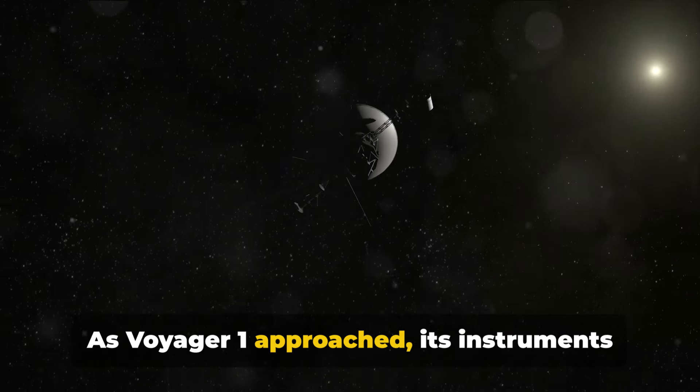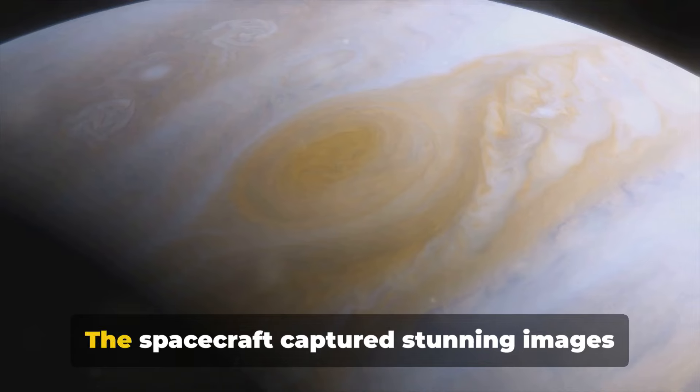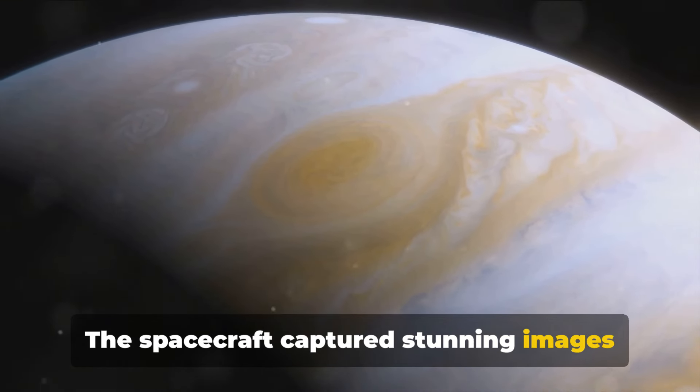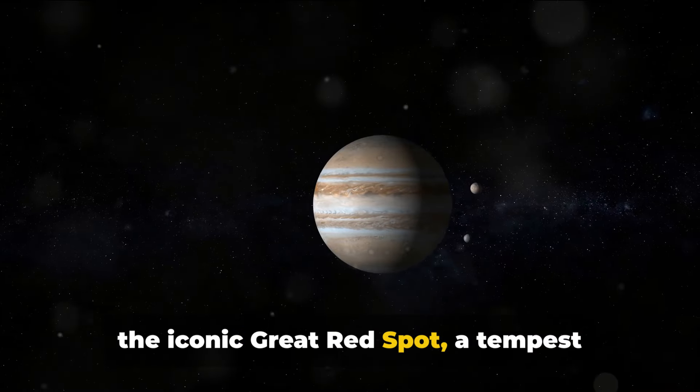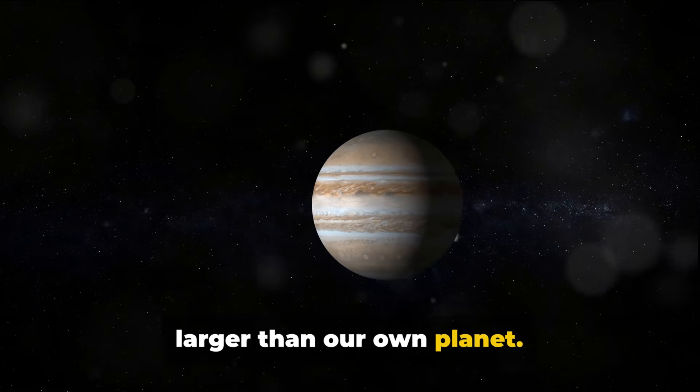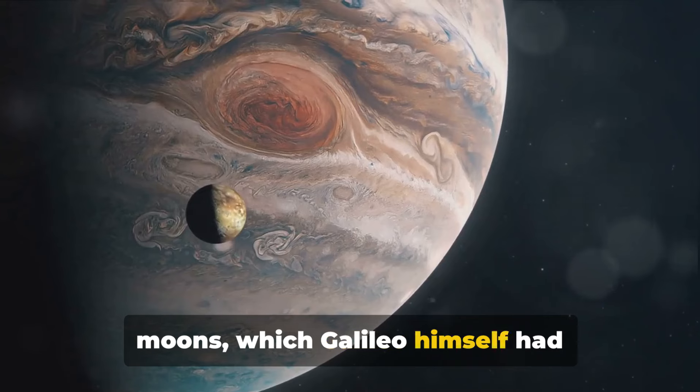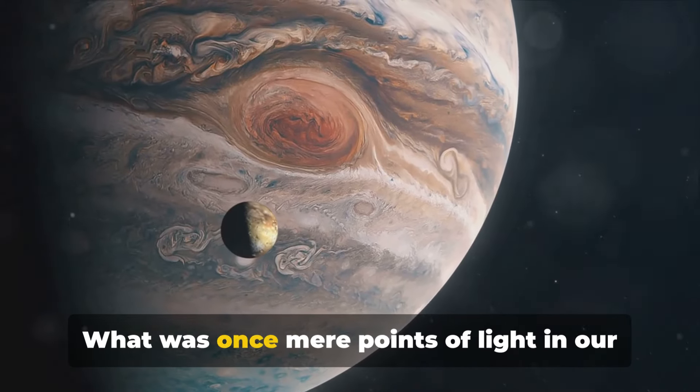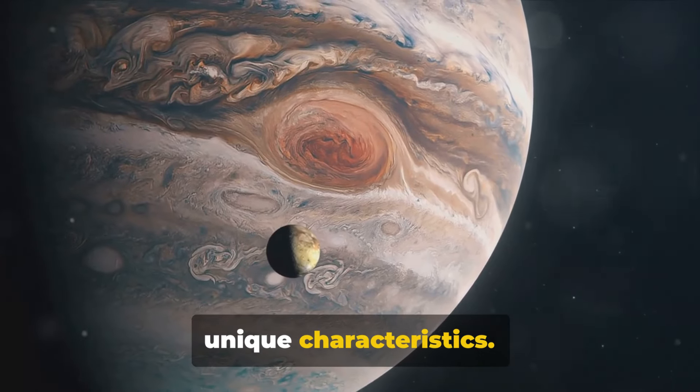As Voyager 1 approached, its instruments began to hum and buzz, recording an array of data. The spacecraft captured stunning images of the planet's swirling storms, including the iconic Great Red Spot, a tempest larger than our own planet. It also studied Jupiter's four largest moons, which Galileo himself had discovered centuries earlier. What was once mere points of light in our telescopes became worlds with their own unique characteristics.